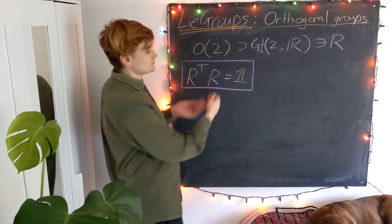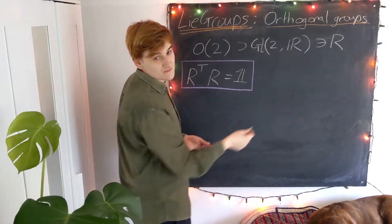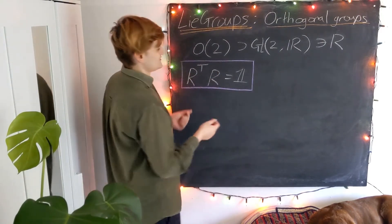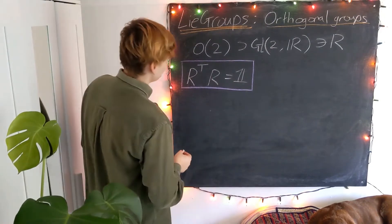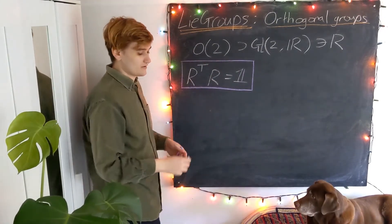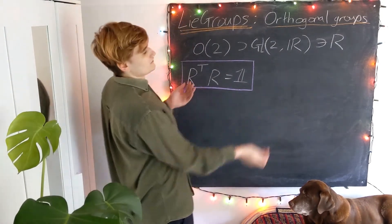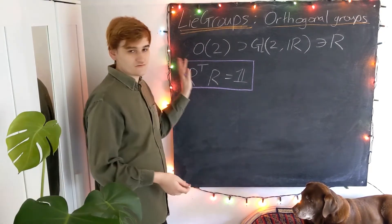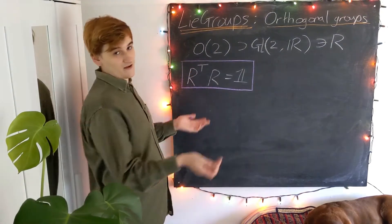The set of all orthogonal matrices — remembering they also have to be invertible to be in GL — forms a subgroup. It's special enough that it gets its own name: it's called the orthogonal group. This is O(2), the orthogonal group of 2×2 matrices. The 2 isn't really referring to the dimension of the group; I'll say more about that in a second.